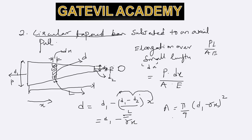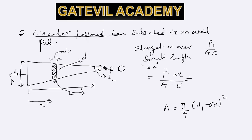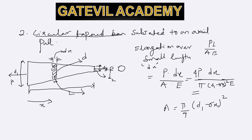So now we have the expression for elemental elongation: it will be P dx over [π/4 (D1 - γx)² times E], and the 4 goes to the numerator. This is the expression for elongation over small length dx. To calculate the total elongation for the bar, we integrate from 0 to L.